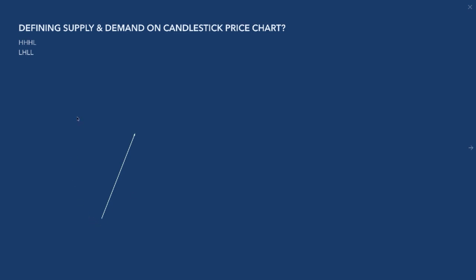Let's define a strong area of demand on a price chart. We definitely have demand when buyers come into the market and push prices up. All of a sudden demand starts to wane — this now becomes an expensive area once prices start to pull back. There's no real demand at that price — let's say ten dollars — so this becomes expensive because buyers are no longer willing to push prices higher.